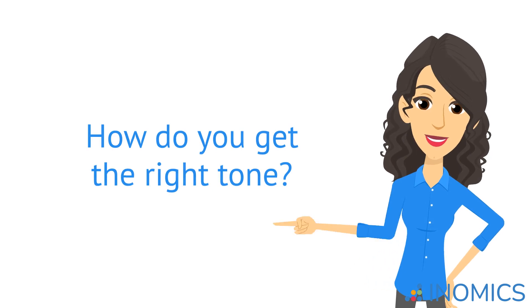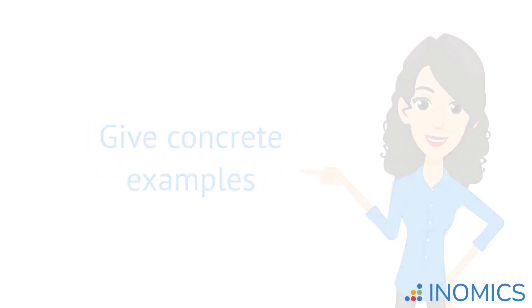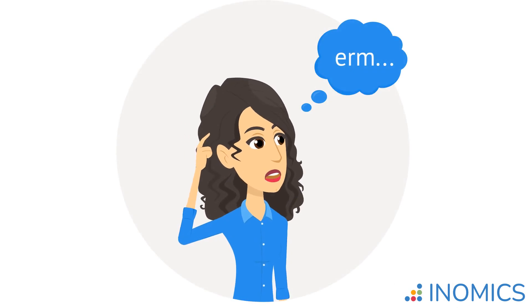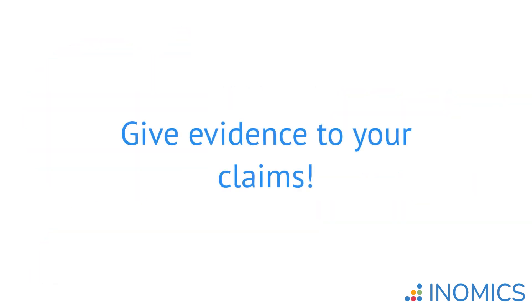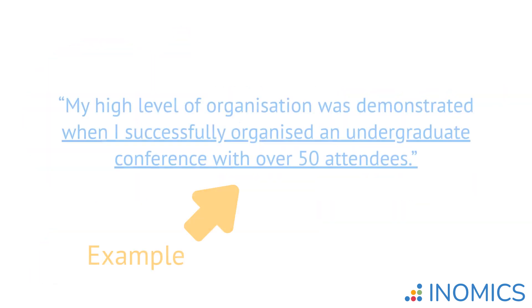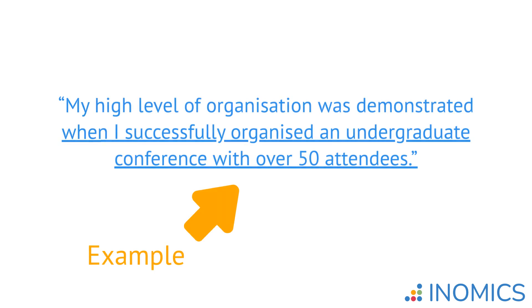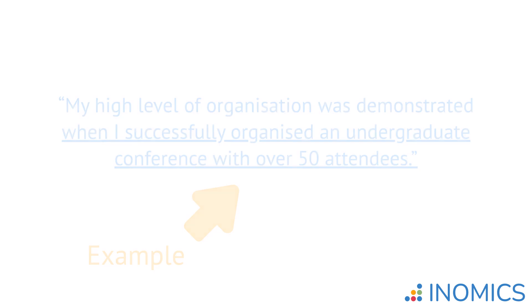So how do you get the right tone? Most importantly, remember to be specific and give concrete examples. One bad habit that many people have when writing their motivation letter is being too vague. Don't just say you find economics interesting or you've enjoyed studying it — this is already assumed by the fact that you're applying for a PhD. Mention which particular courses or topics appealed to you most, and why you want to learn more about them. For better results, give concrete examples of your claims in action, such as: 'My high level of organisation was demonstrated when I successfully organised an undergraduate conference with over 50 attendees.'